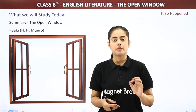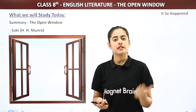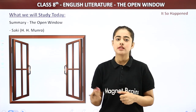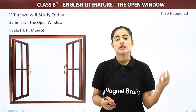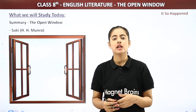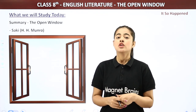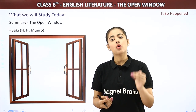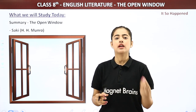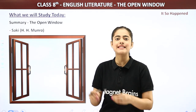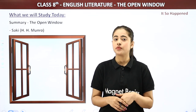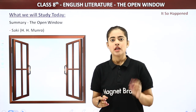There are 3-4 characters here. One is Mr. Frampton Nuttel, who has a nervous disorder, and that is why he leaves his city for a rural retreat. His sister had lived in this rural area four years before, so she gave him some letters of introduction — information about the people she knew there, so that he could go and talk to them and not remain alone. The second character is Mrs. Sappleton. When Frampton goes to her house, she is a little busy, so her niece — a 15-year-old, very confident girl named Vera — that is the third character.